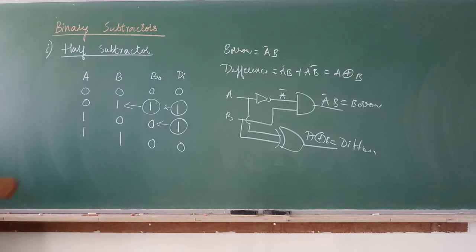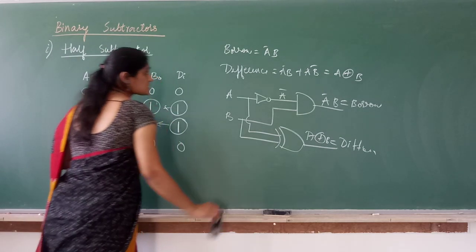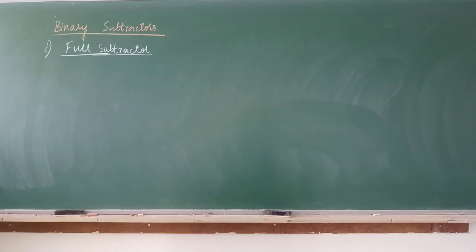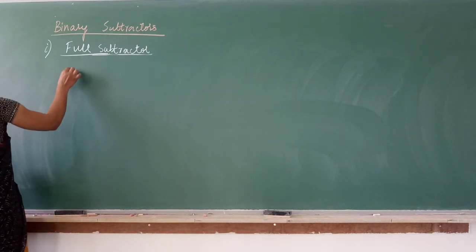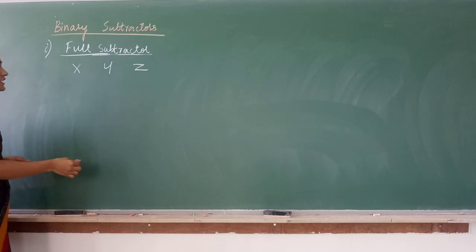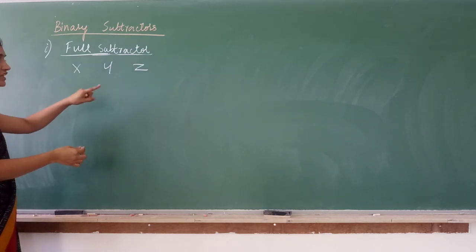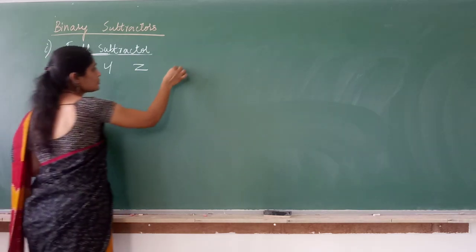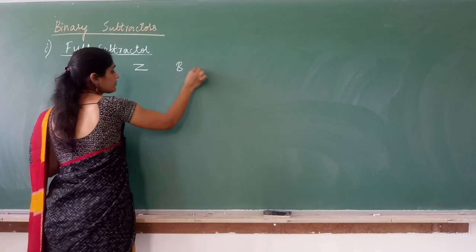Now let us discuss the full subtractor. A full subtractor has three inputs — let us take them as x, y, z (to avoid confusion with B for borrow). The outputs are borrow and difference. With three inputs, there are eight possible combinations.